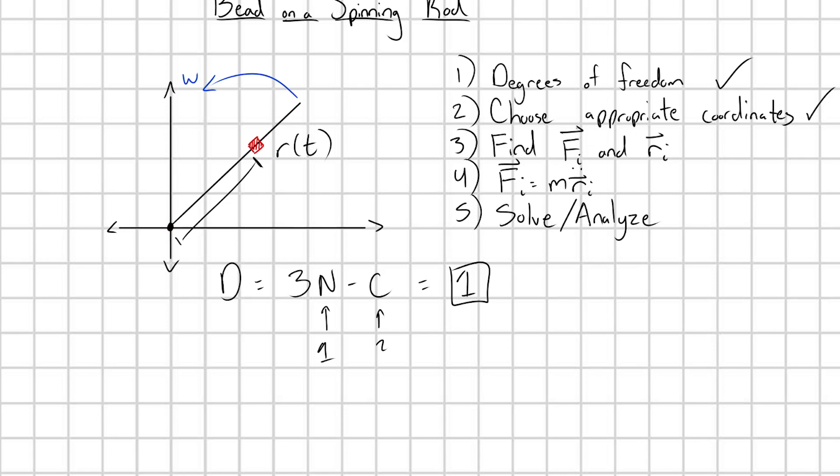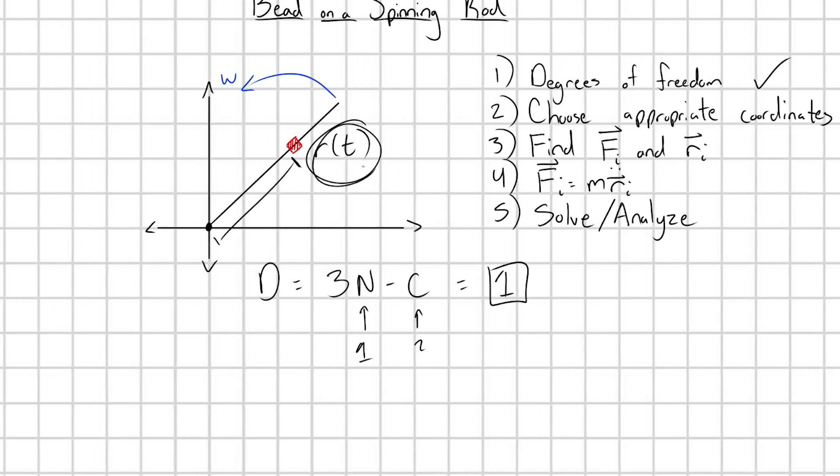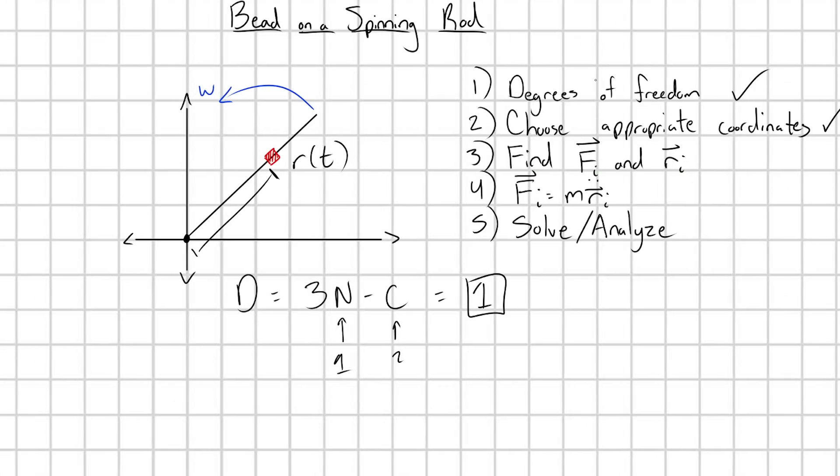On to step three. We're going to need to define what are the net external forces on my bead, and we're going to have to define a position vector in our given coordinate system. We want to track the coordinate R of T, but to use Newton's laws, we need to define a vector to point to the bead. I'm going to call this R of T with a vector on it, not to be confused with the radial coordinate R. And with this radial coordinate, I'm going to define a little unit vector R hat. We can very clearly see that this vector R of T is going to be equal to R of T in the R hat direction.